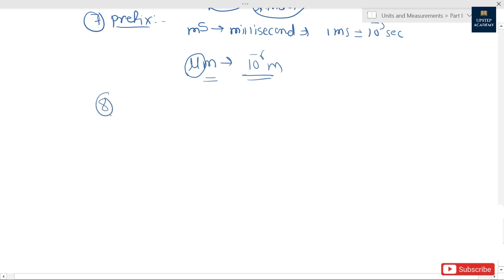Now go for last one. That is we have to put space or hyphen between two symbols. Let's take an example: newton meter. We should not write it like newton meter. We have to write it like newton space meter, or newton hyphen meter. Or one more example I can take: velocity, meter per second.